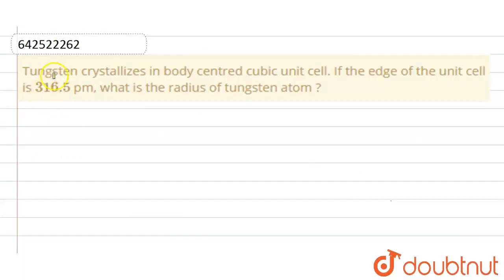Hello everyone, here the question is: Tungsten crystallizes in body-centered cubic unit cell. If the edge length of the unit cell is 316.5 picometer, what is the radius of the tungsten atom?